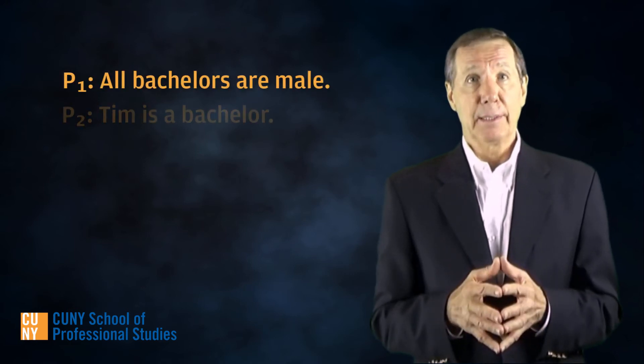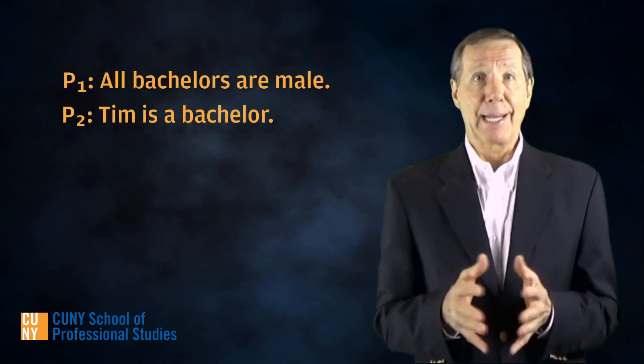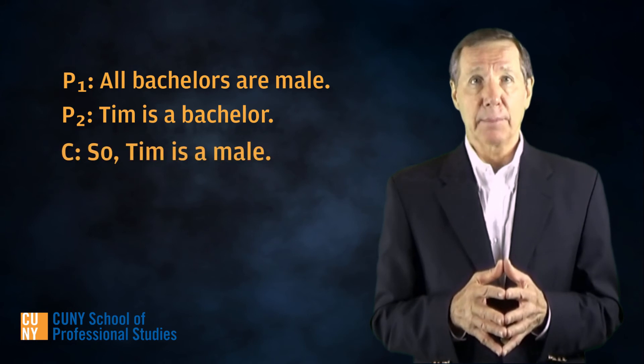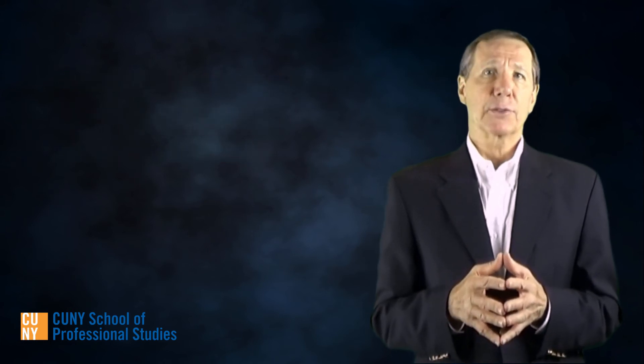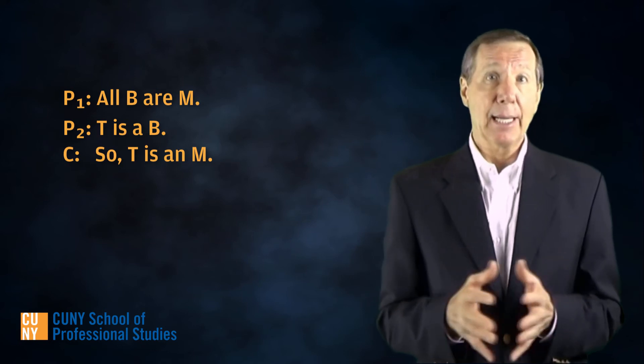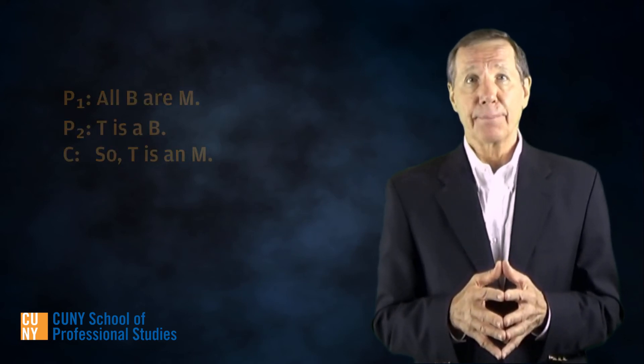For those who are math phobic, here's another example of a deduction. All bachelors are male. Tim is a bachelor, so Tim is a male. As you can see, the argument has this form: All B are M. T is a B. Therefore, T is an M.